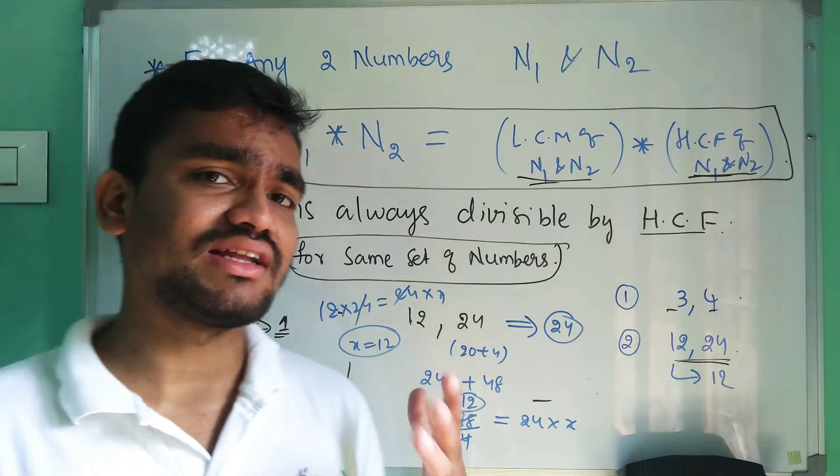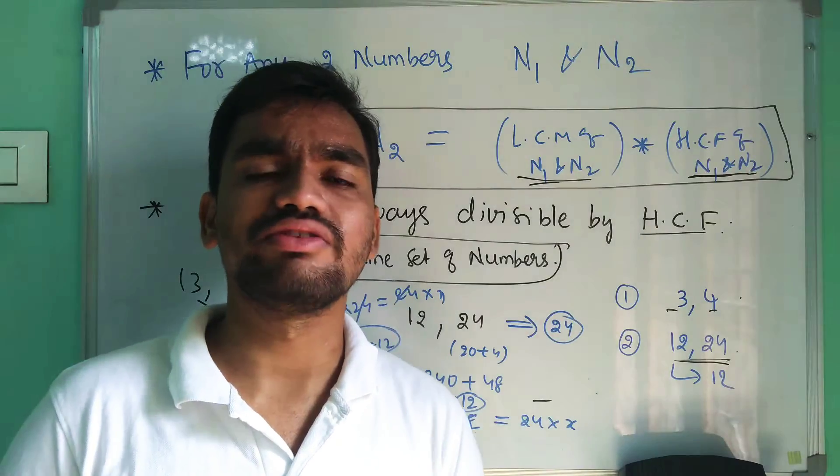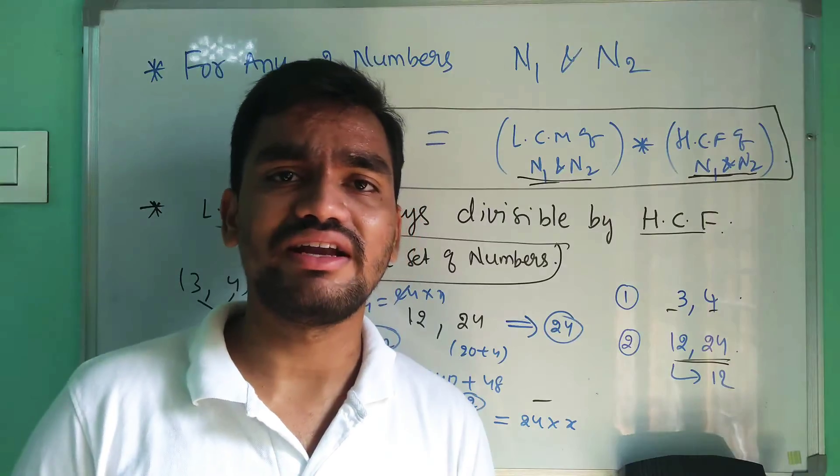Whether in a case to check whether the number is divisible by something, then we have to use the divisibility rules, and finding the LCM, HCF, and relation between them, and the easier ways to find them.